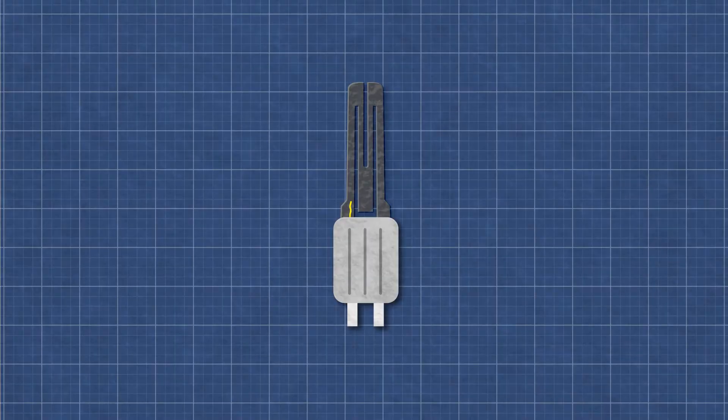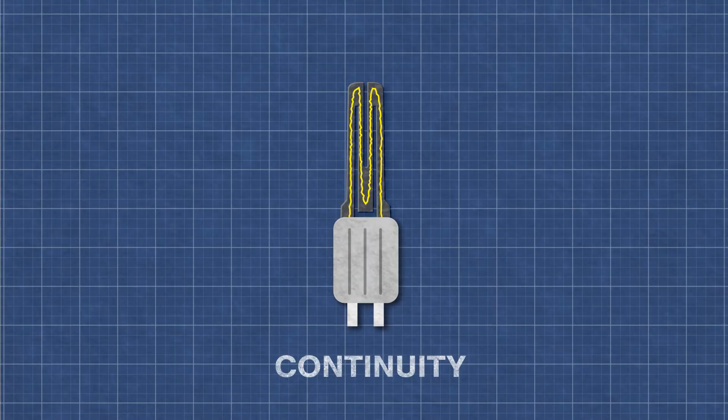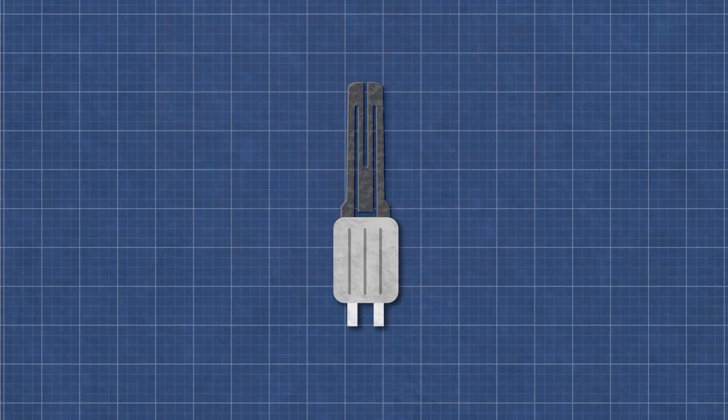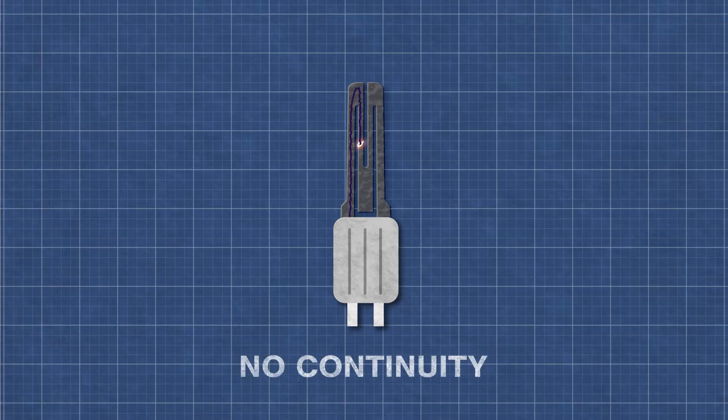A hot surface igniter works similarly to an incandescent light bulb. As electricity flows through the element, the resistance in the material generates heat which causes the gas to ignite. Over time, the igniter can burn out and may appear singed or cracked. Now this can be difficult to see, as even a small break can cause the igniter to fail.